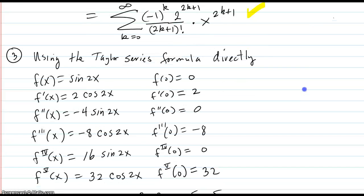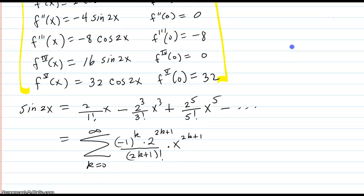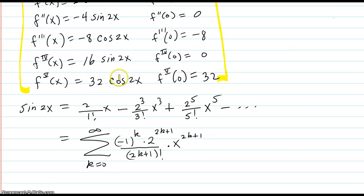Then using the Taylor series formula directly, you don't use any of that fancy stuff. You just say, sin(2x), you get your derivatives, here's all your derivatives, evaluate it at zero. You get all these numbers. Put them in the numerators, put your factorials in the denominators. And you get this pattern, which turns into this summation, which is exactly the same as the other two.